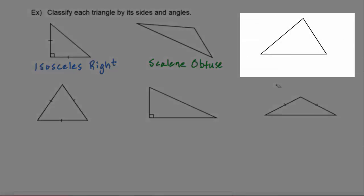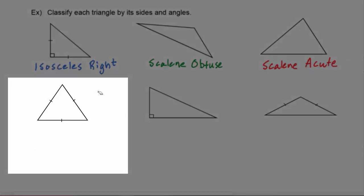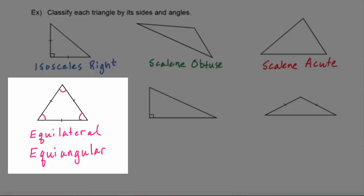Next, once again none of the sides is equal to any other side, so that means it is a scalene triangle. All of the angles are acute, so we have a scalene acute triangle. This triangle here has all three sides equal to each other, so we know it's going to be equilateral. When we learned our definitions we discovered that equilateral triangles must also be equiangular. Equiangular is a special case of acute — all angles are 60 degrees, which means they're acute, but rather than call this an acute triangle we call it the special case of equiangular.